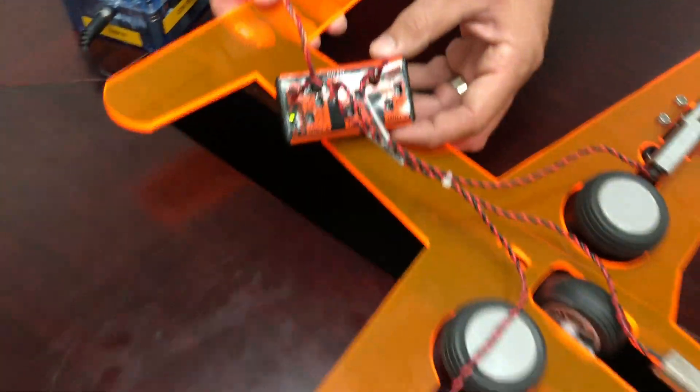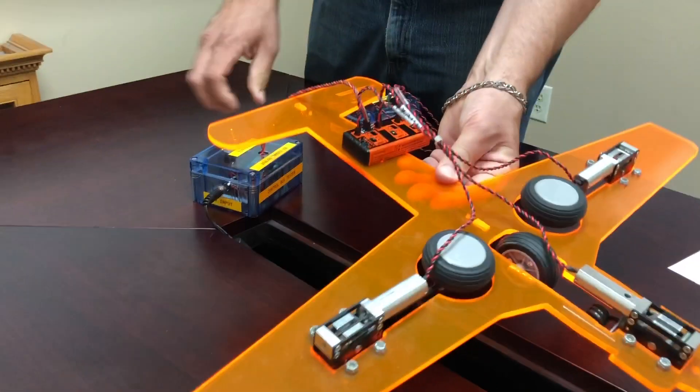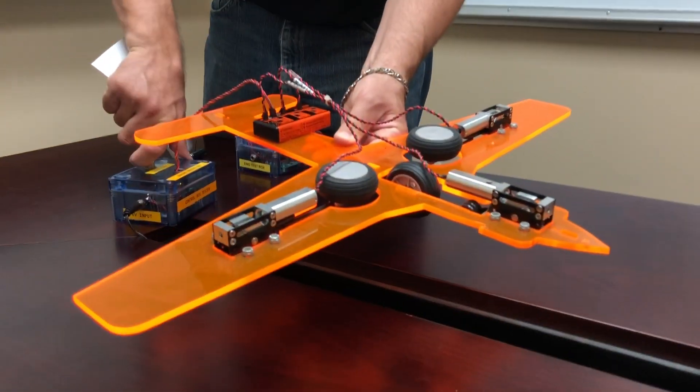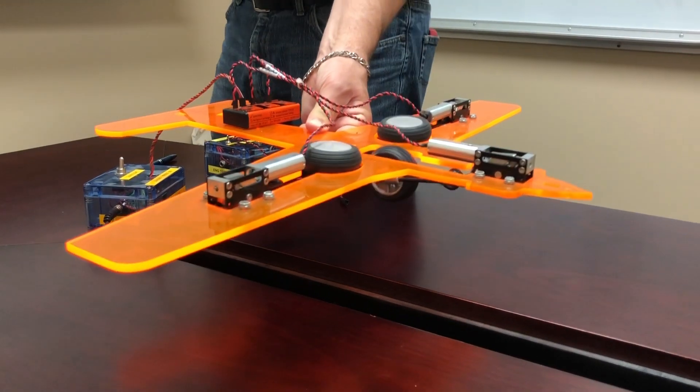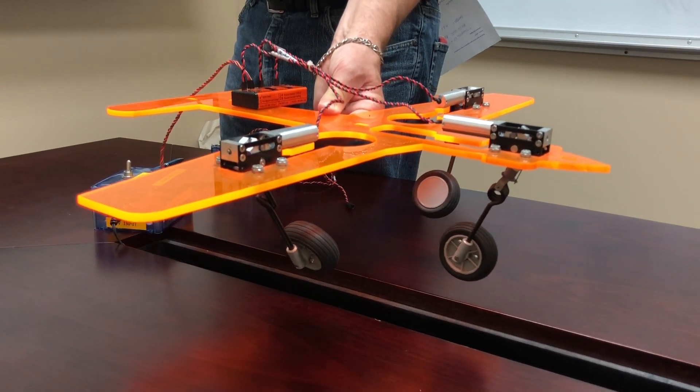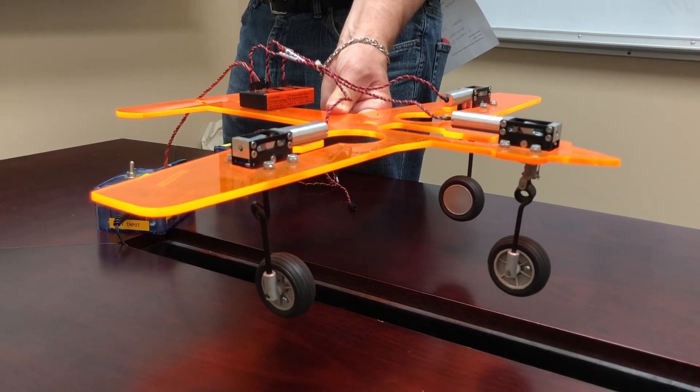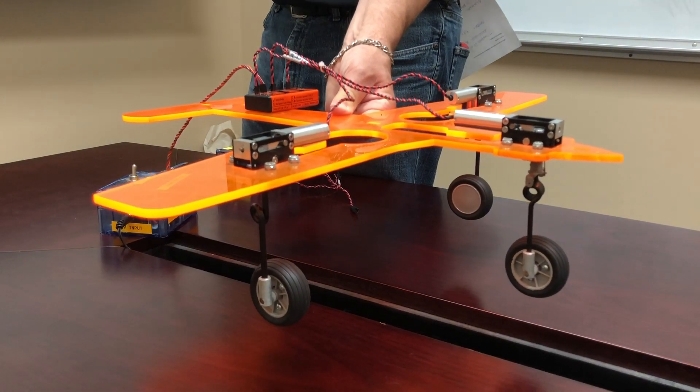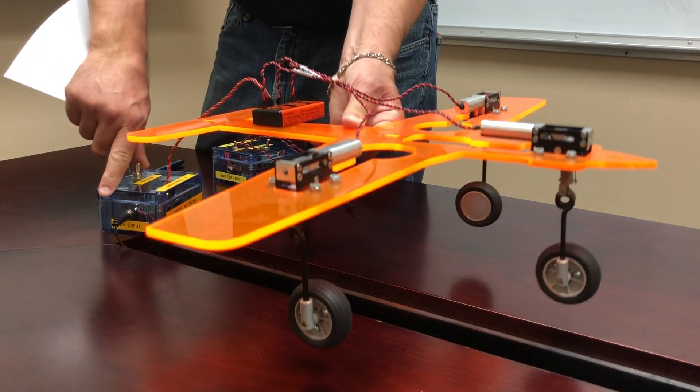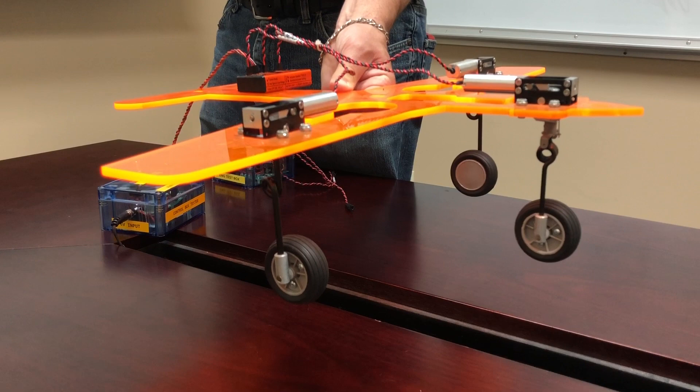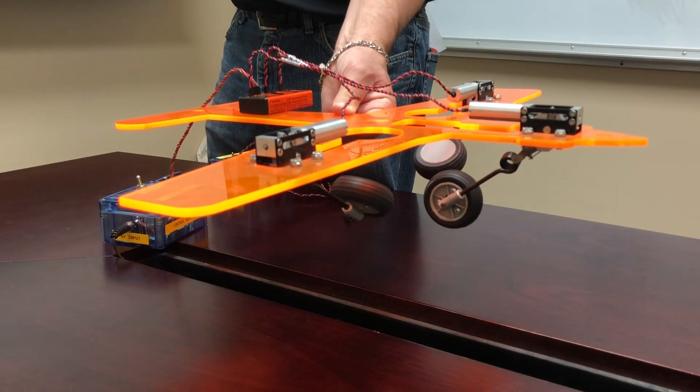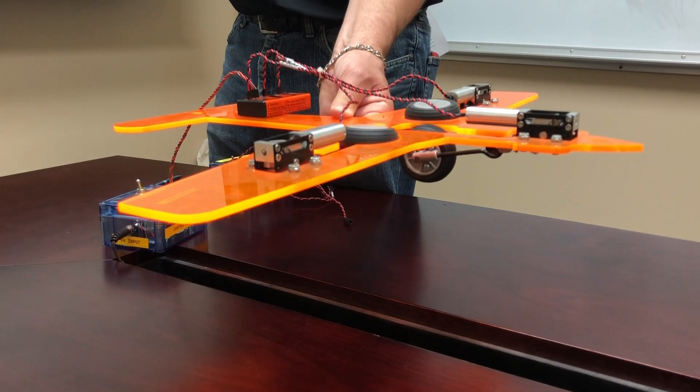I'm going to go ahead and just lift this up so you can see this actually operating. So there's our gear in a fully deployed position, and then I'll go ahead and activate it one more time. Put the retract switch and gears in the retracted position.